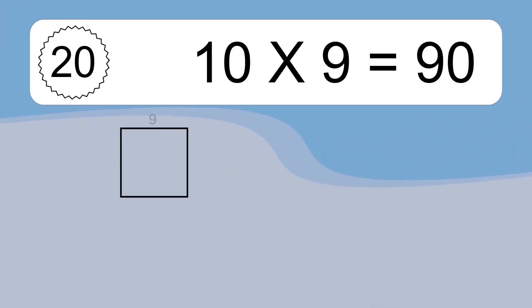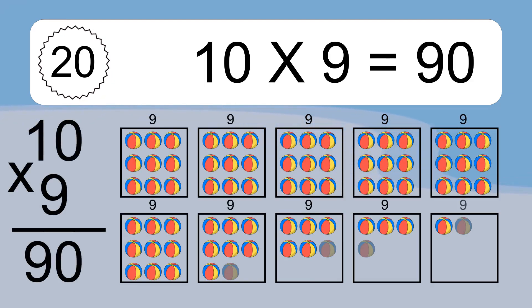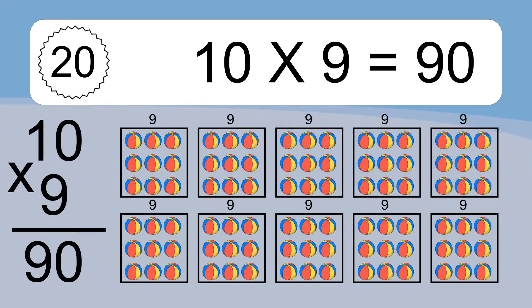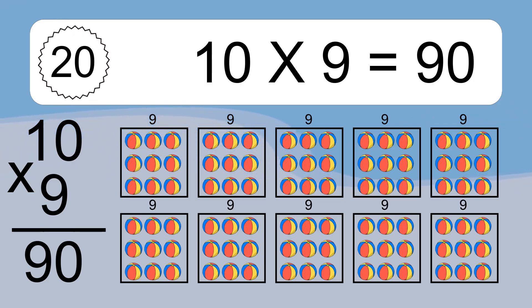10 times 9 equals what? We have 10 boxes, and each box has 9 colorful balls inside. If you count all the balls in all the boxes together, you will have 10 times 9 balls. This equals 90 balls.